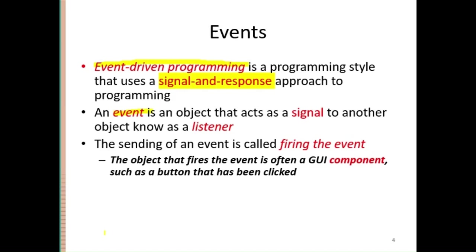When an event occurs, it will signal to another object known as a listener. When an event is listened, then some kind of processing should be performed. For example, if you click something on a GUI component, then you expect some kind of processing. To perform that processing, you need to listen to the event. So in GUI, you are supposed to fire events, those events must be listened, and after that some kind of processing should be performed.